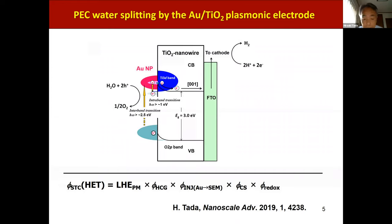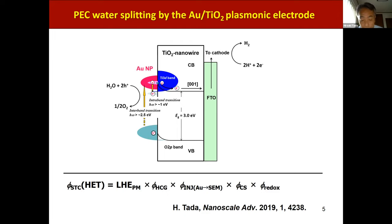What I'm showing here is a basic scheme for plasmonic water splitting. The LSPR excitation by photons with energy larger than 1.5 eV generates hot carriers in the gold nanoparticles. Part of the resulting hot electrons are injected into the conduction band of TiO2, while the hot holes oxidize water. The solar to chemical conversion efficiency is provided by the cascade of: light harvesting by plasmonic metal, hot carrier generation, hot electron injection from plasmonic metal to semiconductor, and charge separation and redox reaction.